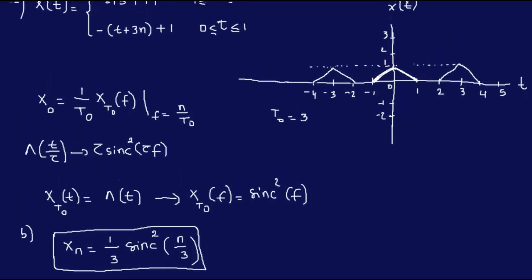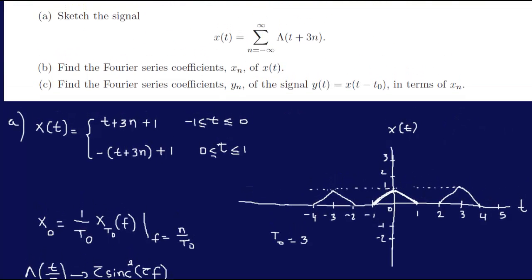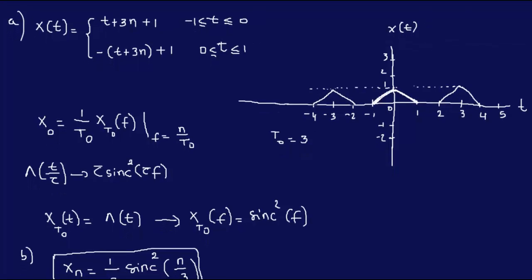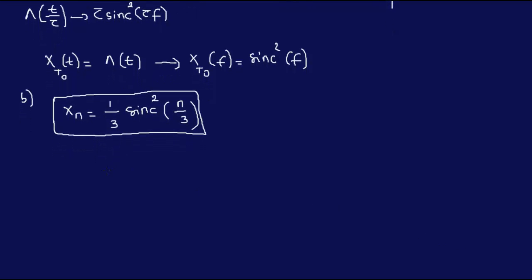Now for part C: find the Fourier coefficients Y(N) of the signal y(t) = x(t − t₀) in terms of X(N). So y(t) is equal to x(t − t₀), and they ask for Y(N) in terms of X(N). I have X(N) over here, and y(t) is x(t) shifted to t₀.